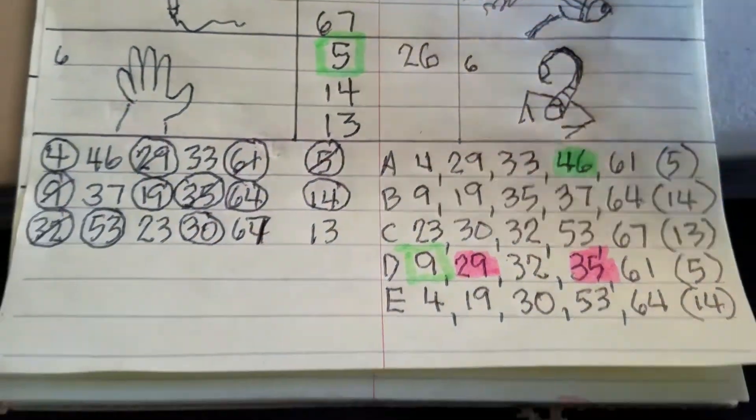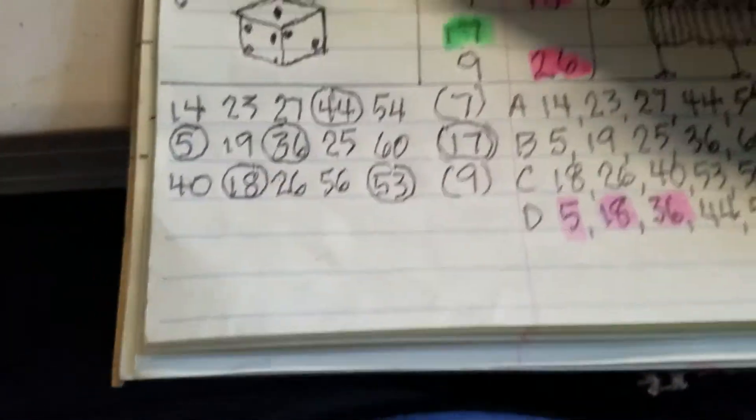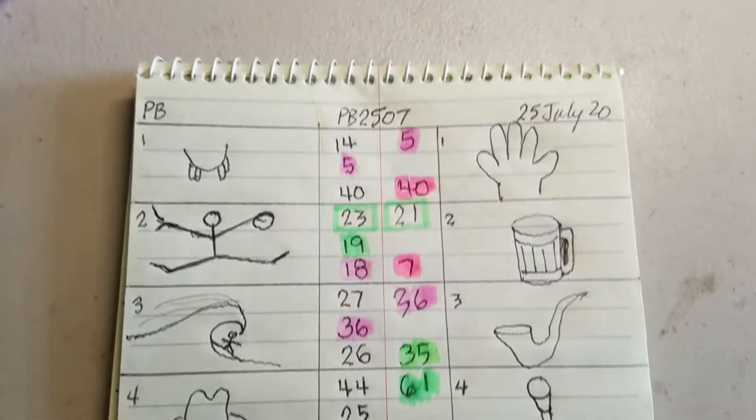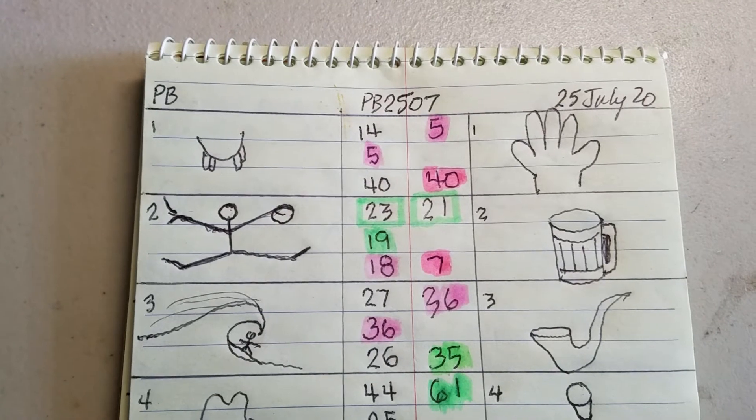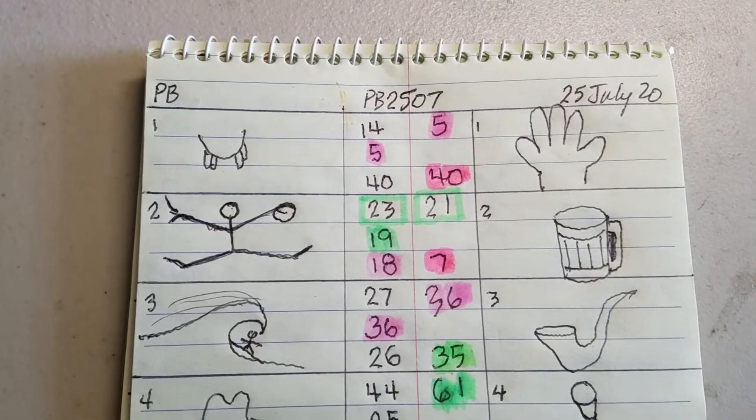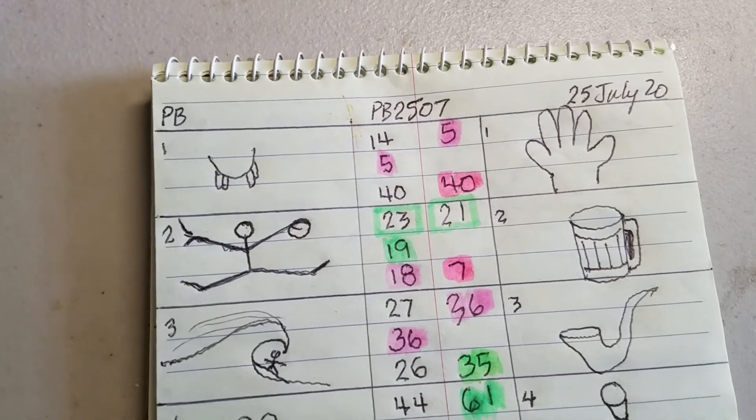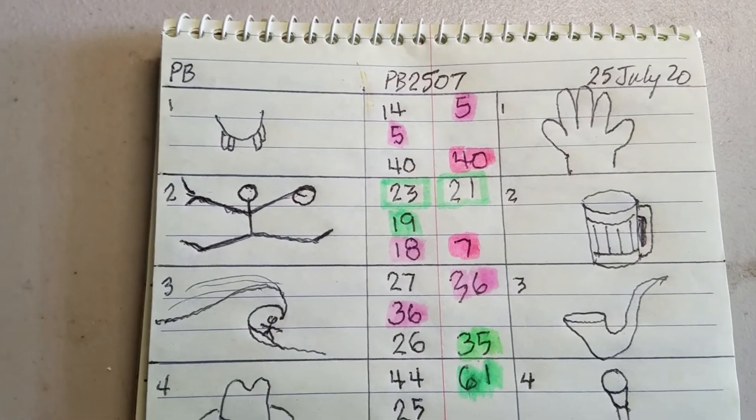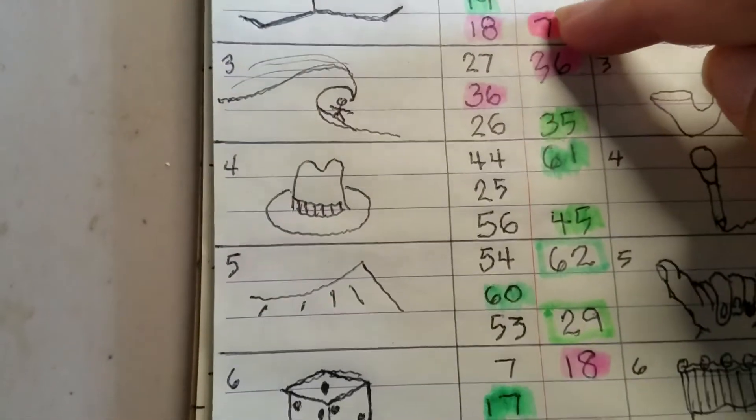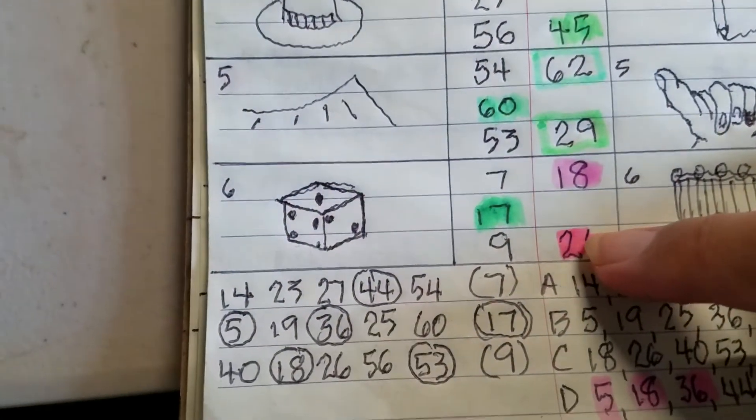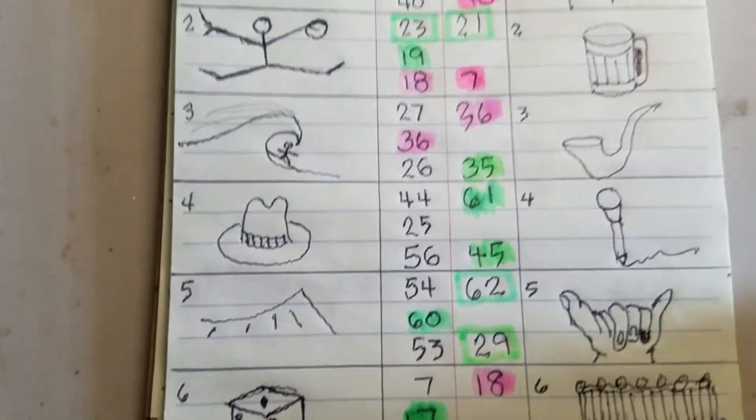Interesting thing is if I compare this number set, the numbers that were drawn, with the numbers that I created for last time on the 25th of July, which is the second set of numbers. So you notice that I have one, two, and three numbers highlighted in pink.